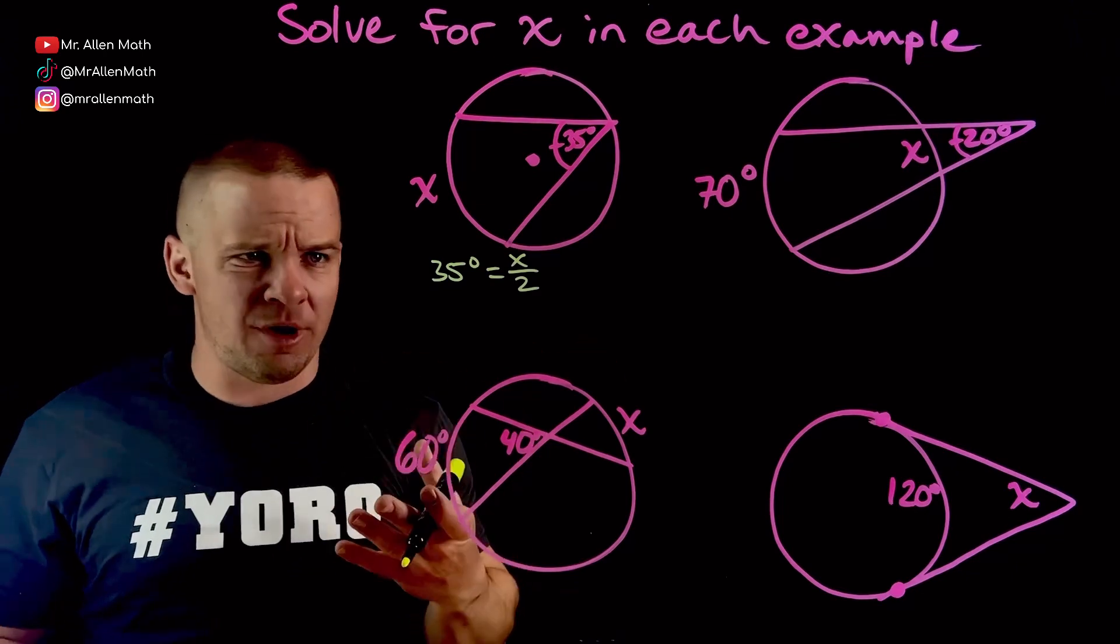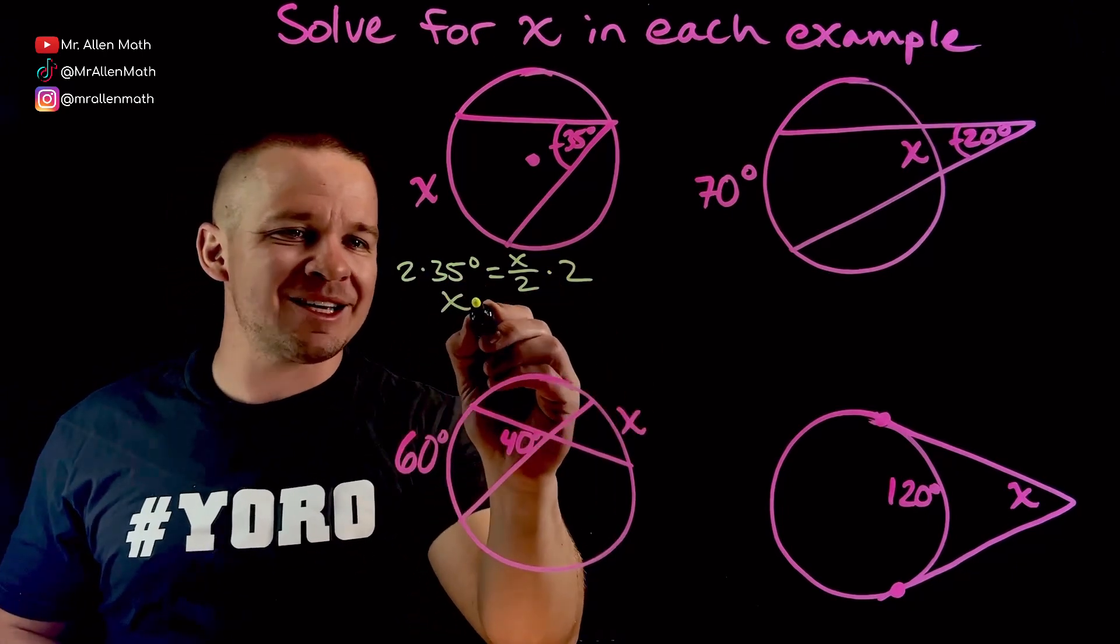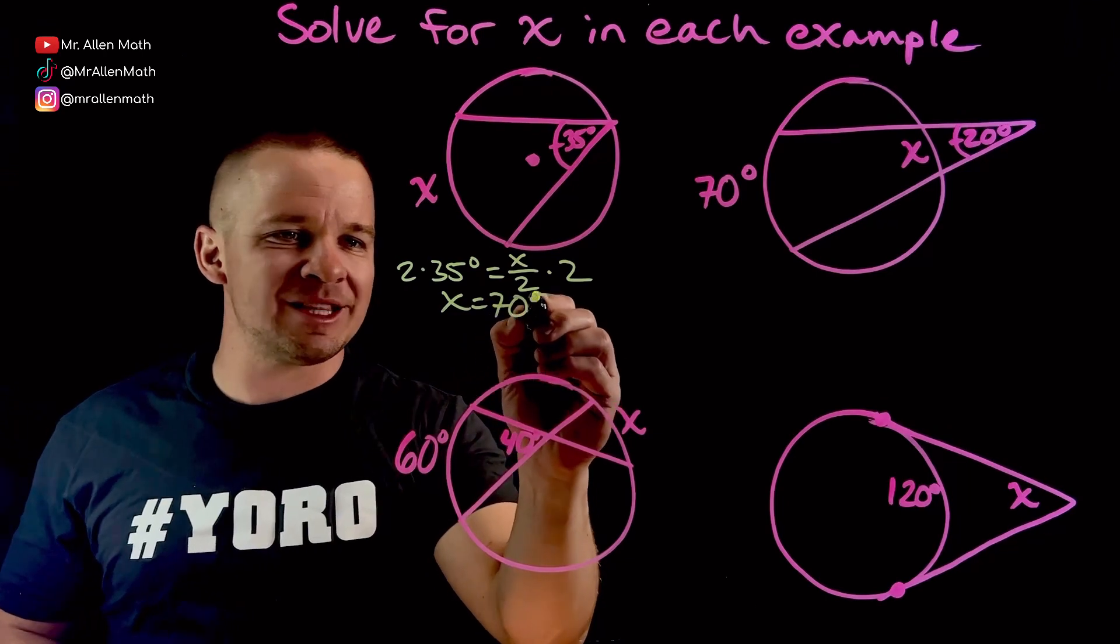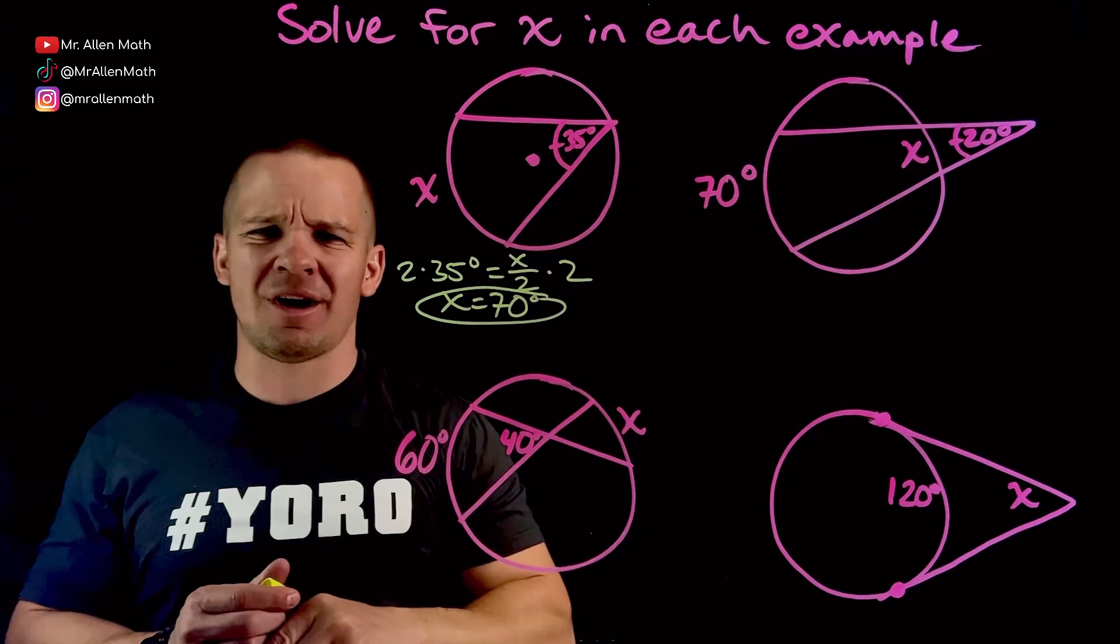What am I going to do to solve that algebraically? How about I multiply by 2 on both sides? Boom. I'm going to get X equals 70 degrees, that's it, one example down. That's what I'm talking about.